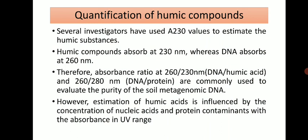For quantification of humic acid contamination, reports show absorbance at 230 nm is used to estimate humic substances, while DNA absorbs at 260 nm. Therefore, the absorbance ratio of 260 to 230 nm is the main criterion to identify any contamination caused by humic acid compounds — this is how we determine whether DNA is contaminated with humic acid.